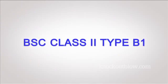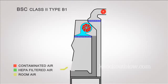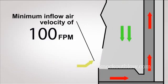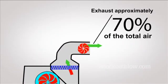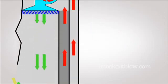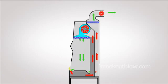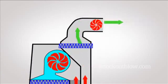BSC class 2 type B1 cabinets have a minimum inflow air velocity of 100 feet per minute through the front opening with an exhaust approximately 70% and recirculating air of 30%. The exhaust cabinet air must pass through a dedicated duct to the outside through a HEPA filter.